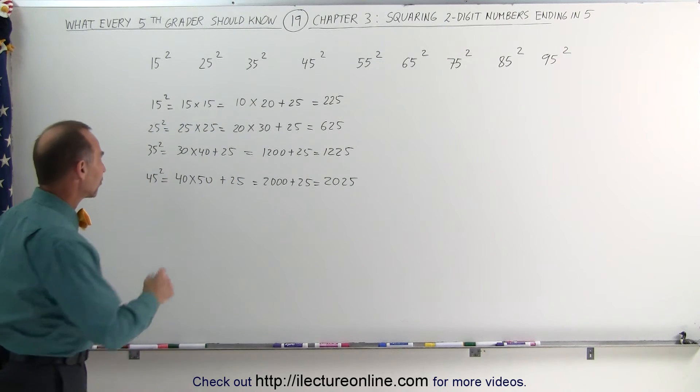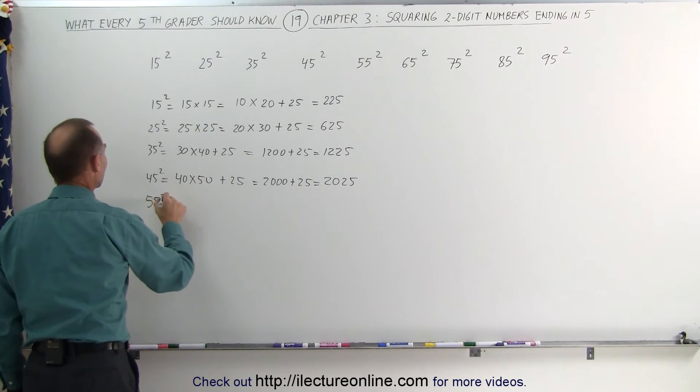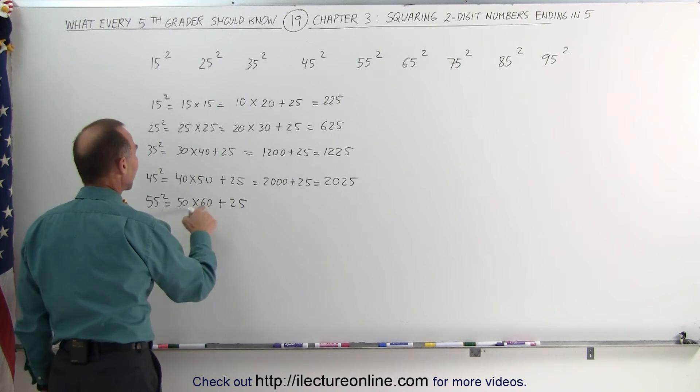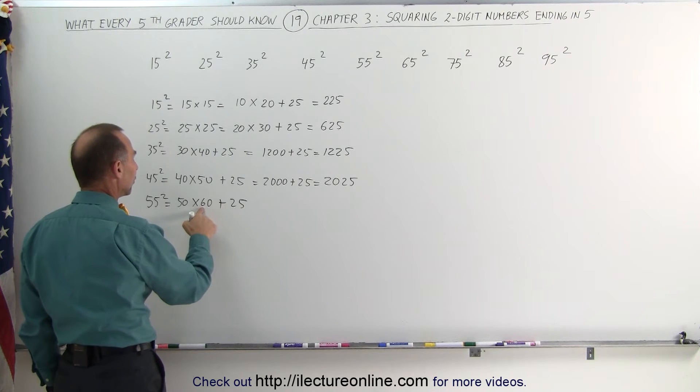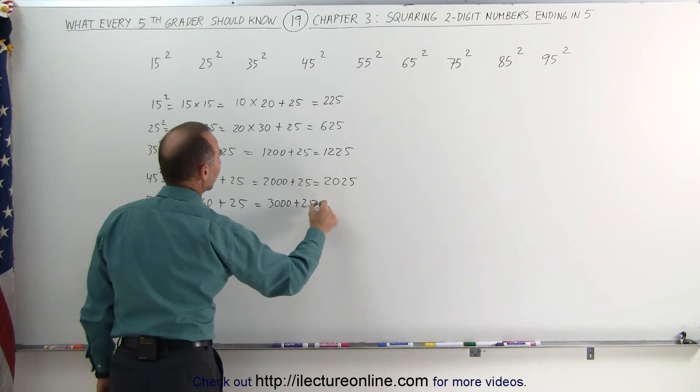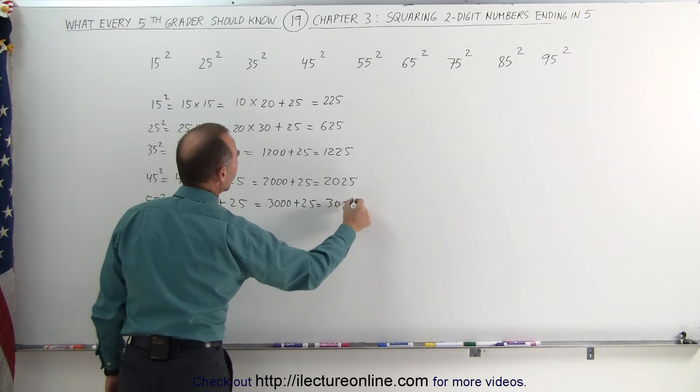Now let's try 55 squared. 55 squared, that's the same as 50 times 60, plus 25. 50 times 60, 5 times 6 is 30, add 2 zeros, gives you 3000, plus 25, that's equal to 3025.